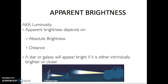The second characteristic astronomers study when looking at stars is apparent brightness. This is different from absolute brightness. Apparent brightness is simply how bright a star looks to the observer — astronomers also call it luminosity. Apparent brightness depends on two things: absolute brightness and distance. A star or galaxy will appear bright if it is either intrinsically very bright or because it is closer to us.